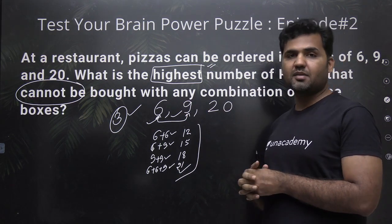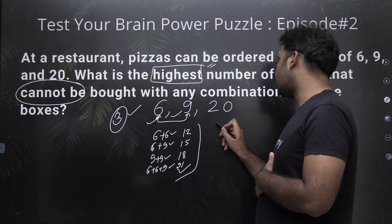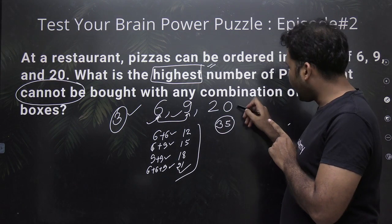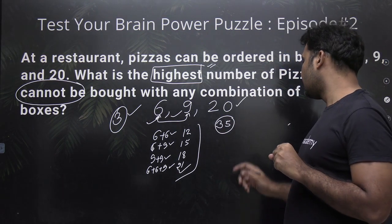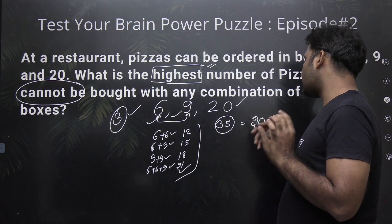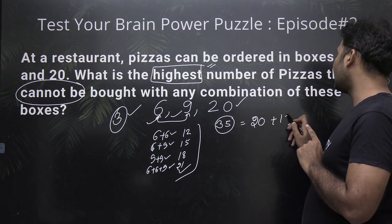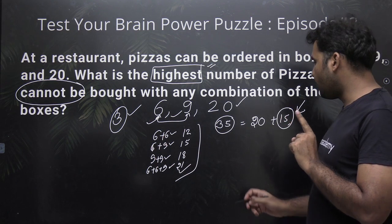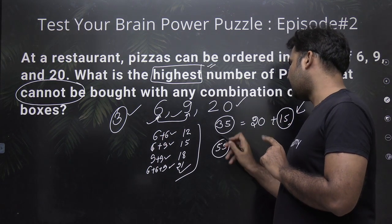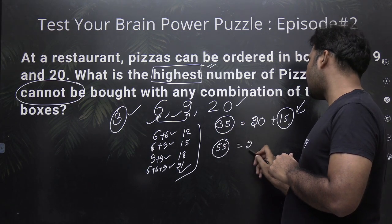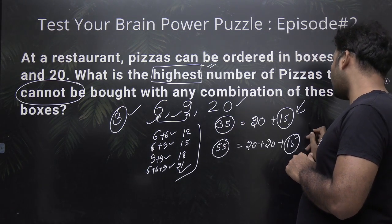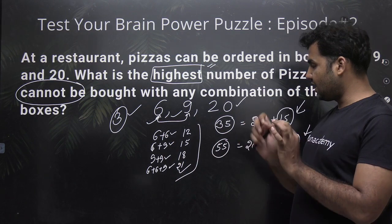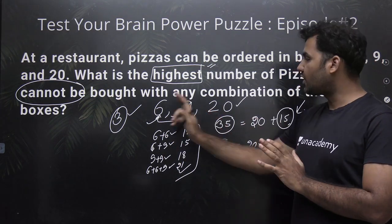For example, if somebody wants to buy 35 pizzas — is that possible? Yes, 35 is possible. Why? Because I have a box of 20 pizzas. So from 35, if I use one box of 20, I will be left with the number 15. And 15 is a multiple of 3, which I can make as 6 plus 9. Similarly, if somebody wants to buy 55, I will use 2 boxes of 20, leaving 15 — and I know how to make 15 with a combination of 6 and 9.